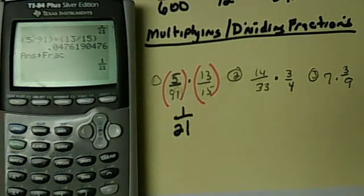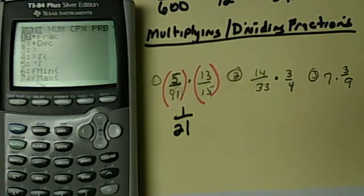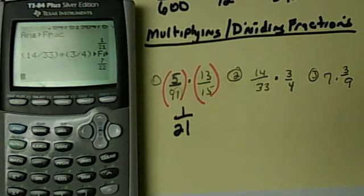14 over 33 times 3 fourths. So if I use the parentheses, 14 over 33 times 3 over 4. And then math, enter, enter. And so my answer is 7 over 22.